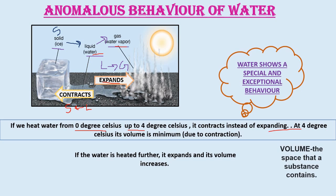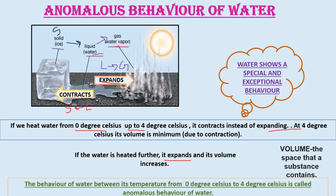If the water is heated further after 4 degrees Celsius, it expands. It will normally expand and its volume increases. After 4 degrees Celsius, the water expands and its volume increases, so it will follow the normal process. The behavior of water between its temperature from 0 degrees Celsius to 4 degrees Celsius is called the anomalous behavior of water. In this temperature range, water shows exceptional behavior.